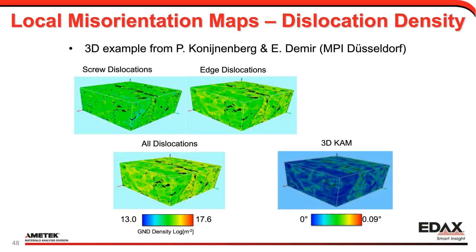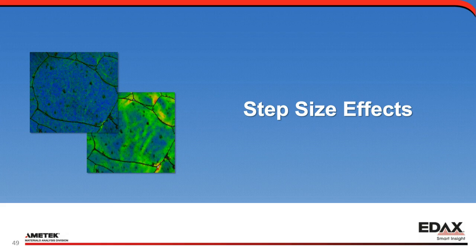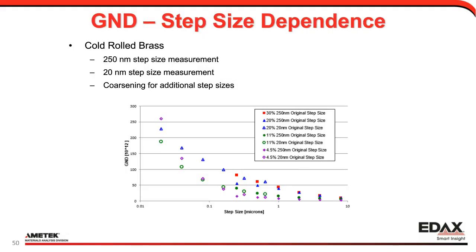What are the step size effects? Here are some experiments on cold-rolled brass, done at 250 nanometer and 20 nanometer step sizes, then coarsened to pick up other step sizes — covering 30%, 20%, 11%, and 4.5% cold work. The measured GND density from EBSD measurements goes up as the step size goes down. So it's clearly step size dependent. You can see that in the KAM results: the nearest neighbors on the left are pretty noisy because at the smallest step size, the misorientations are small and I'm starting to reach the limits of EBSD precision. As I go to larger step sizes, the misorientations tend to be larger and I pick those up more clearly, getting cleaner results. Nonetheless, you can see some of the same features develop regardless of step size, even though the magnitude differs.